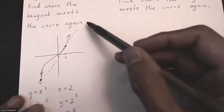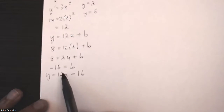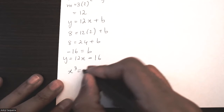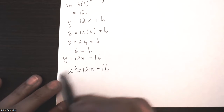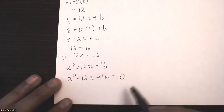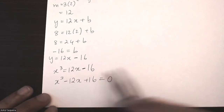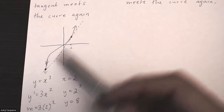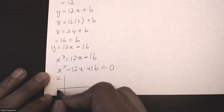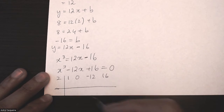Now I want to find where this tangent line intersects the curve again. To do that, I equate the original equation x cubed to the tangent line equation: x cubed equals 12x minus 16. This is a cubic equation, so I'll bring everything to one side. Since we already know x equals 2 is a solution, I can start synthetic division with positive 2 directly.